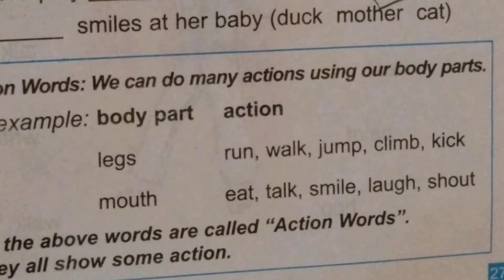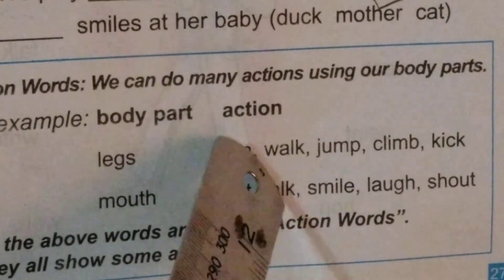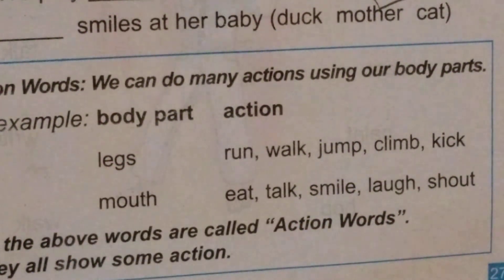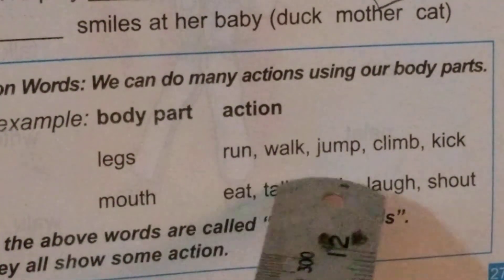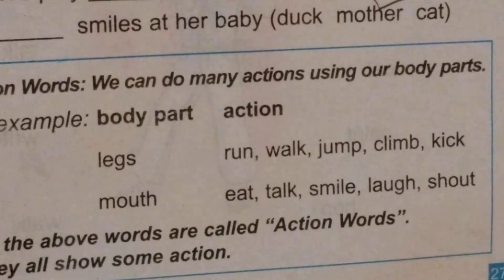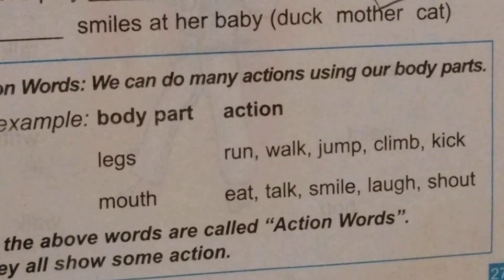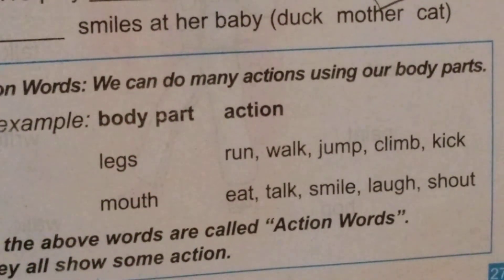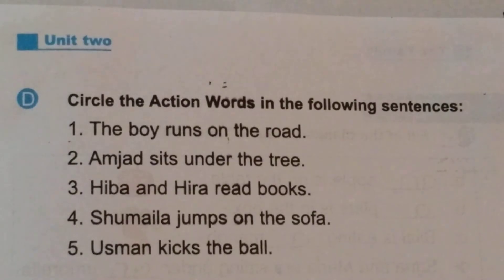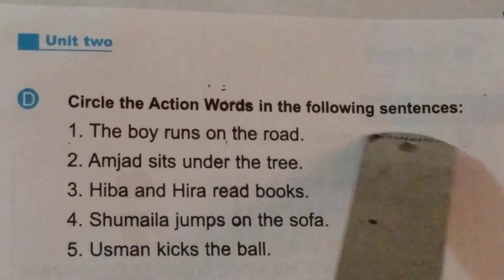Dash smiles at her baby — who smiles at her baby? Mother! Yes, mother smiles at her baby. We have done exercise C. Children, here are some actions which you do using your body parts. Through legs you can run, walk, jump, climb, and kick. Through your mouth you can eat, talk, smile, laugh, and shout. This is exercise D from grammar unit 2 — you will circle the action words in the following sentences.